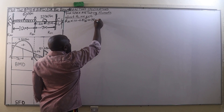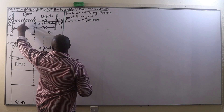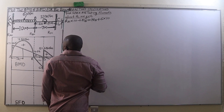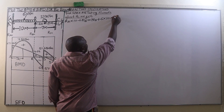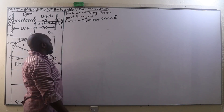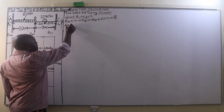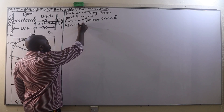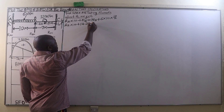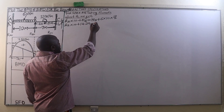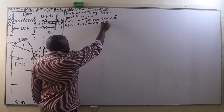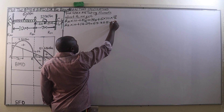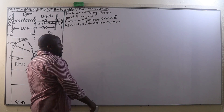Therefore, we are going to add MA plus, between A and B, we have a UDL of 6 kN per meter multiplied by the span over which it is distributed, and it is going to act at the mid of that span. This gives us RA times 10 plus MB, which is 14.29. So, 14.29 equals MA, 67.855, plus 600 divided by 2, that is 300.